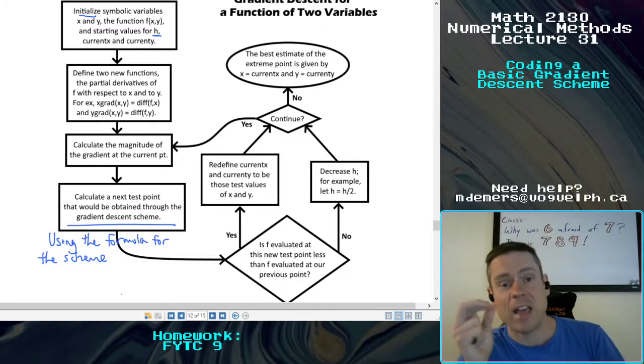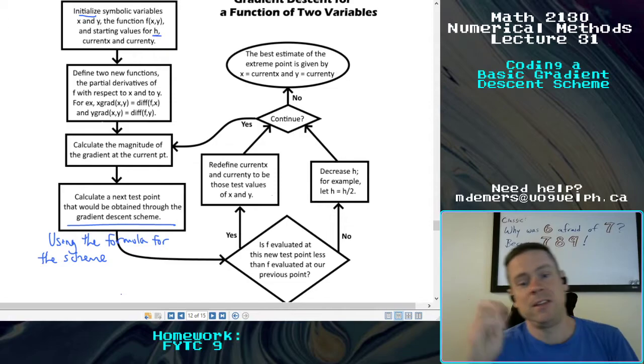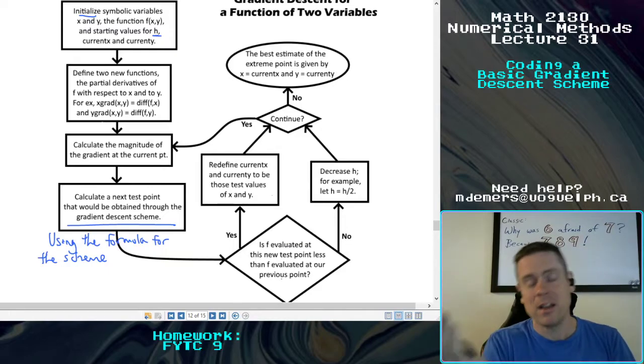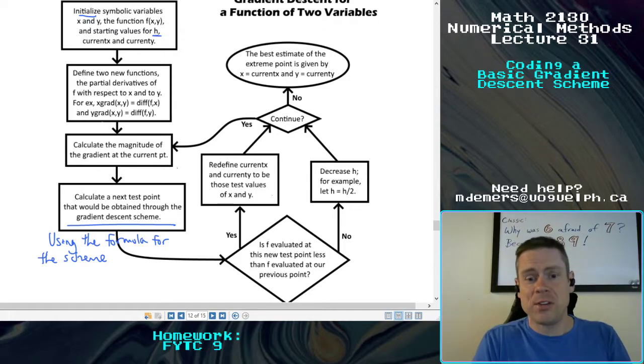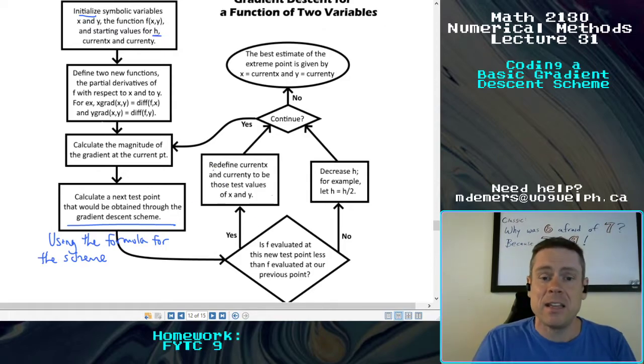And that gives us a new test point. What we're going to do is evaluate that test point, evaluate f at that test point and see, compare it to f at our previous point. There are two options there. Maybe it's less than it. And if it is, then you want to redefine the current x and current y to be that new test value. And then you want to repeat the scheme.